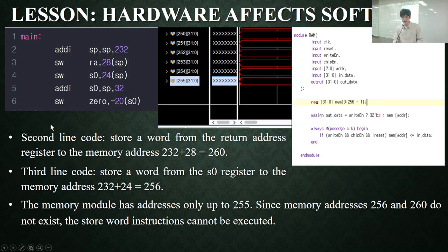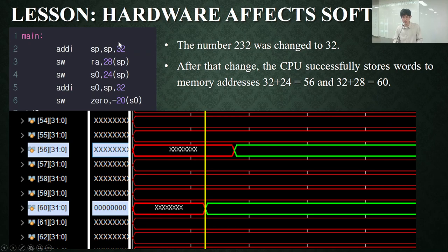In this project, I made a mistake. I wanted to execute this assembly code on the CPU, but it did not work. I tried to find the reason why. The second line instructs to store a word to the memory address 260. The third line instructs the CPU to store a word to memory address 256. But I realized that my memory module has addresses only up to 255. To fix this, I changed the number 232 to 32 and verified that the CPU can store a word to the memory addresses 56 and 60. This mistake gave me a lesson that a limitation in hardware can actually affect the execution of software.